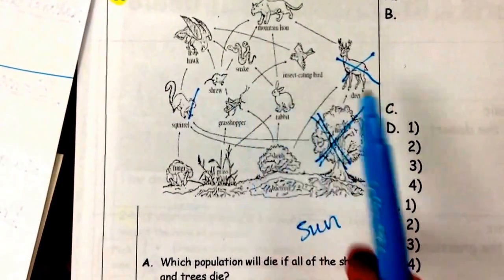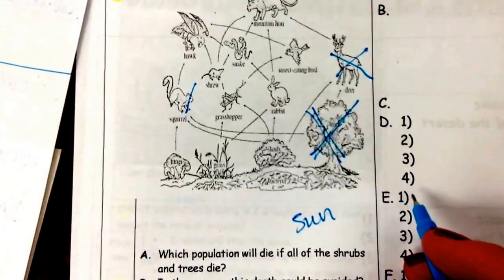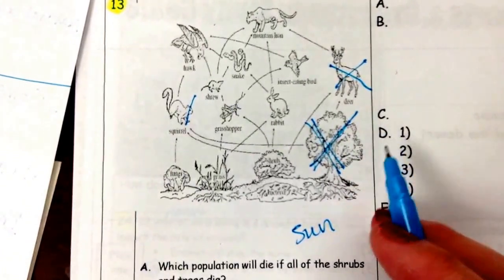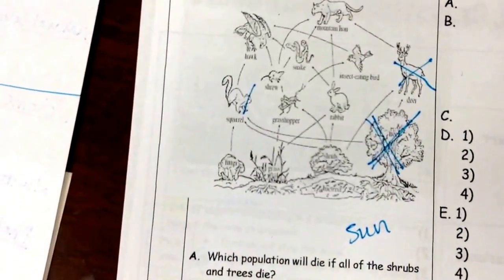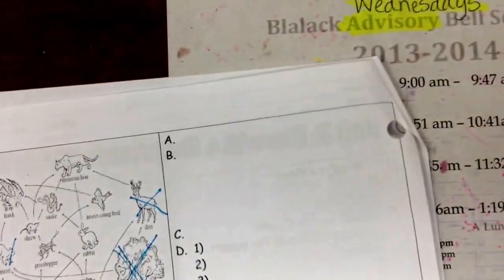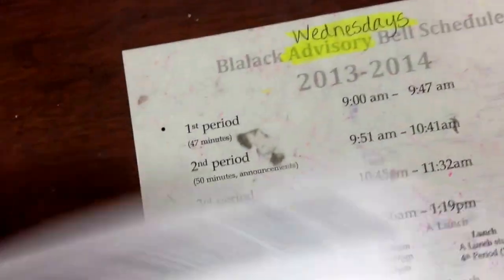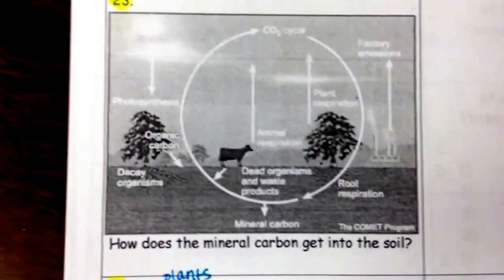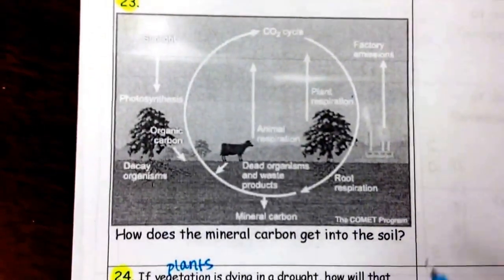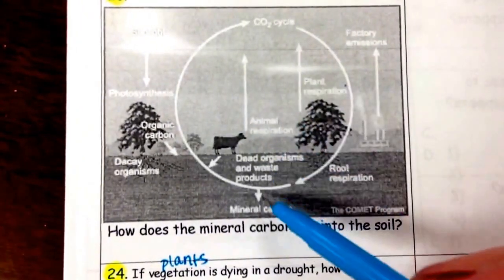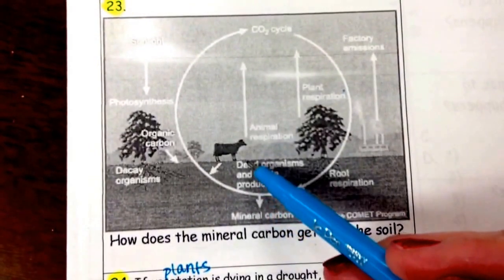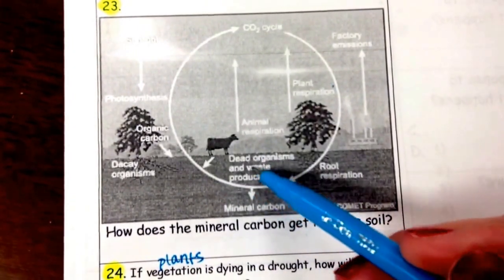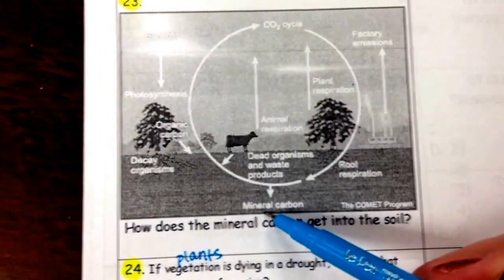The sun is the ultimate source of energy where it all begins, that radiant energy. Now, all these organisms, when they die, what happens to their bodies? They decompose. And when they decompose, all their nutrients from the body go back into the soil. So the soil is enriched with nutrients and things can grow again. Now, I want us to look at something on this back page. My question right here was, how does the mineral carbon get into the soil? Well, I don't know if you all realize this, but every living thing has carbon in it. But even if you didn't know that carbon is in every living thing, you can look right here and see the mineral carbon is right here. And if you look above it, it says dead organisms and waste products. See how it's going into the soil? It's because these organisms have died. And when they die, they decompose and all the nutrients are going back into the soil, including the carbon. So that's how carbon gets back into the soil is when things decompose.